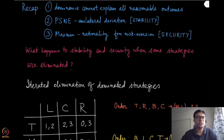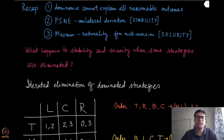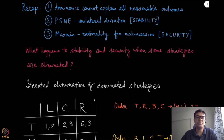So far we have defined a bunch of different notions, starting from dominance to Nash equilibrium, and finally we have also talked about the maximin. By dominance, we have seen that it cannot explain all reasonable outcomes because there are games where no dominant strategy exists. Then we have seen pure strategy Nash equilibrium, where unilateral deviation is not beneficial, which gives some sort of a stability guarantee.